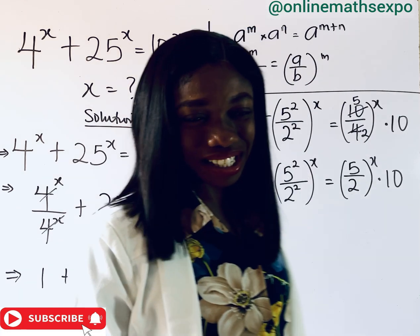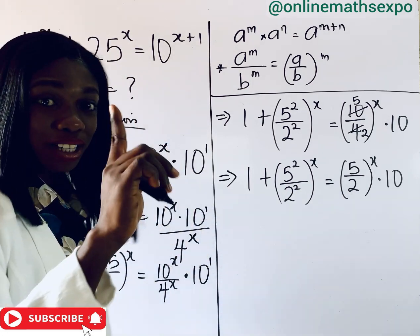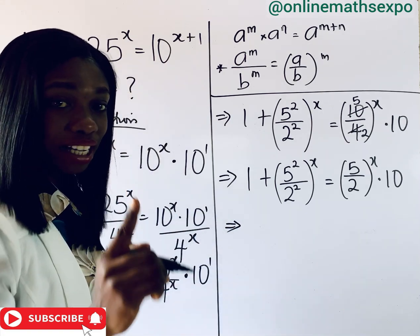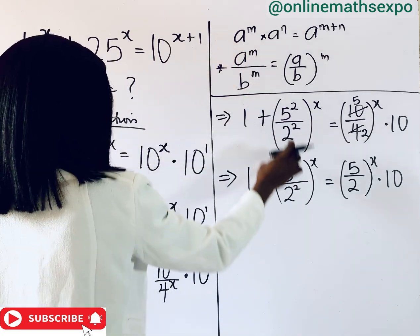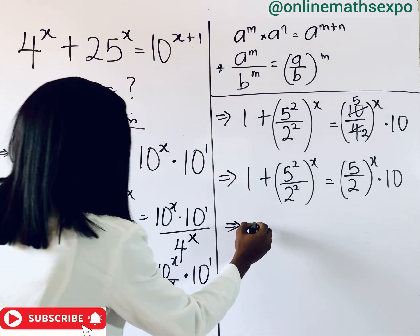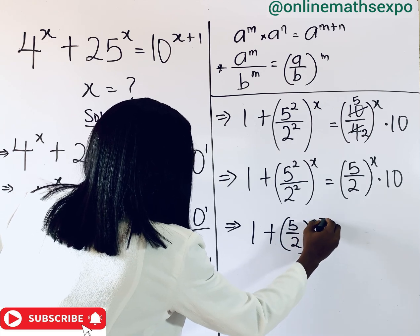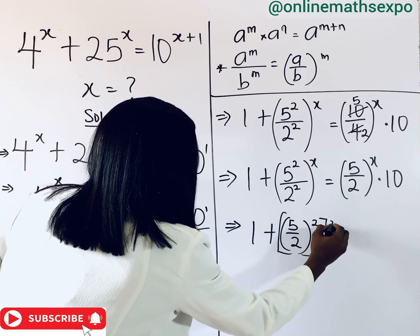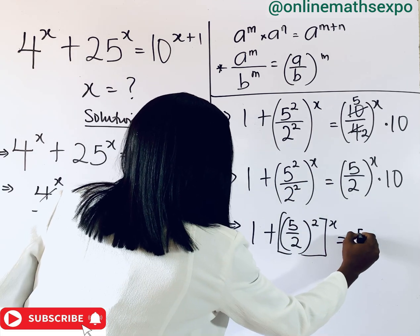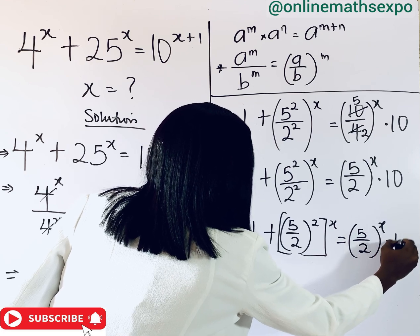Something interesting is happening here. Let me remind you of another exponent rule: we can make it so that 5 over 2 raised to the power of 2, then raised to the power of x, is the same as 5 over 2 raised to the power of x. So we are going to have 1 plus 5 over 2 raised to the power of 2, then raised to the power of x, which is equal to 5 over 2 raised to the power of x, multiplied by 10.